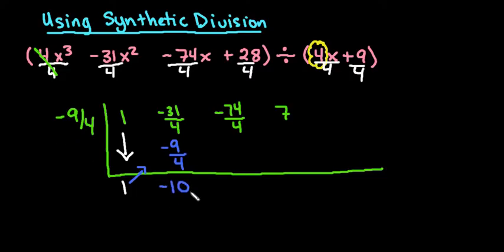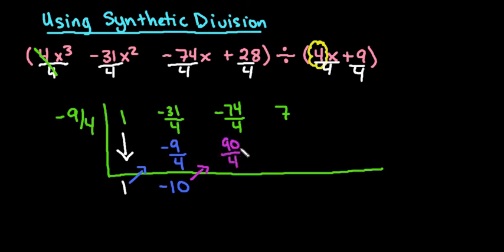Because it becomes a whole number again, that's why it's not worth converting to decimals — decimals could cause problems if they weren't concise. Next, negative 9 fourths times negative 10 is positive 90 over 4. Looking at the top number: 90 minus 74 gives 16, and 16 divided by 4 is 4. So again, just a whole number.